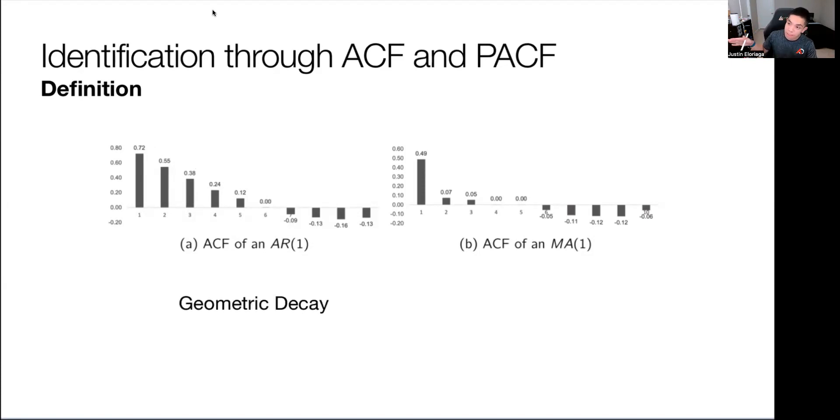We refer to the gradual decrease as a geometric decay in formal terms, and this one is cut off after the lag order. So that's how we visually identify an AR from an MA using the ACF.